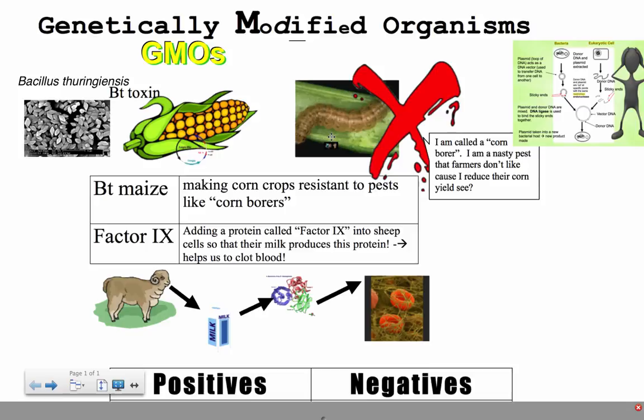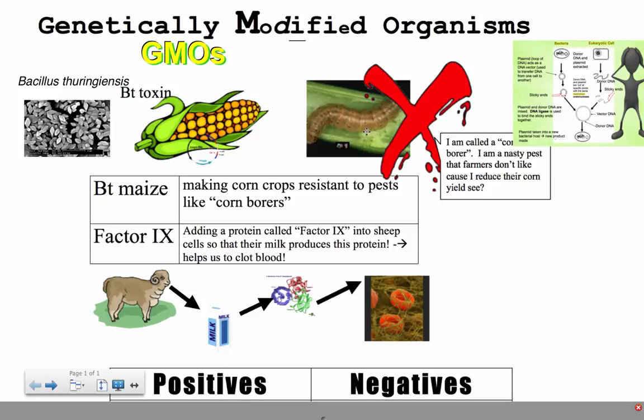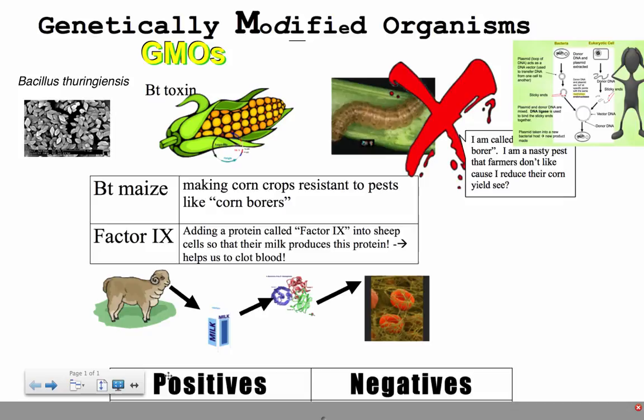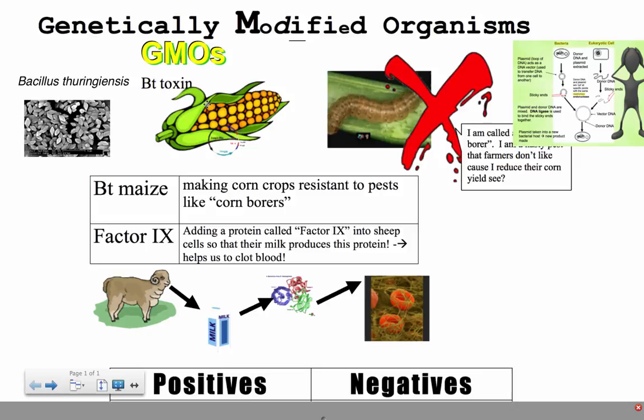We're aiming to kill pests that are eating the crops because it makes farmers angry, lowers their crop yield, they make less money, and we produce less food. That is one specific use of genetically modified organisms. We'll talk later about positives and some negative consequences of using BT maize specifically.